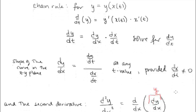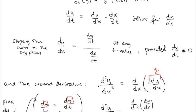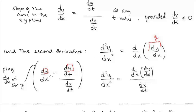What would the second derivative look like? The second derivative is d²y/dx², the derivative with respect to x of dy/dx. Remember, dy/dx is written in terms of t, and we're treating it as an original y. So the formula gives us d²y/dx² equals the derivative with respect to t of dy/dx, all over dx/dt.